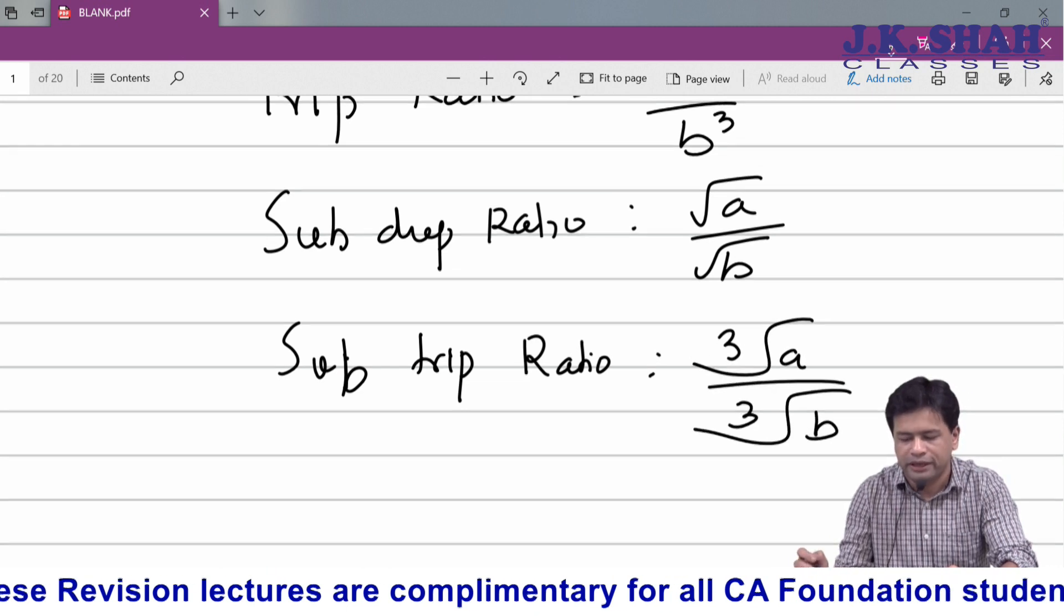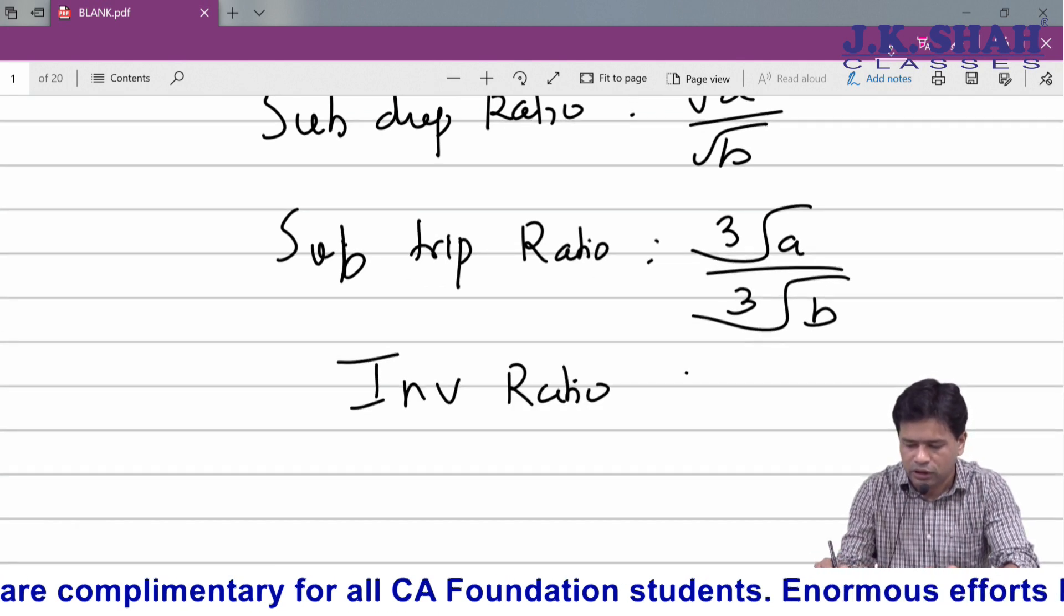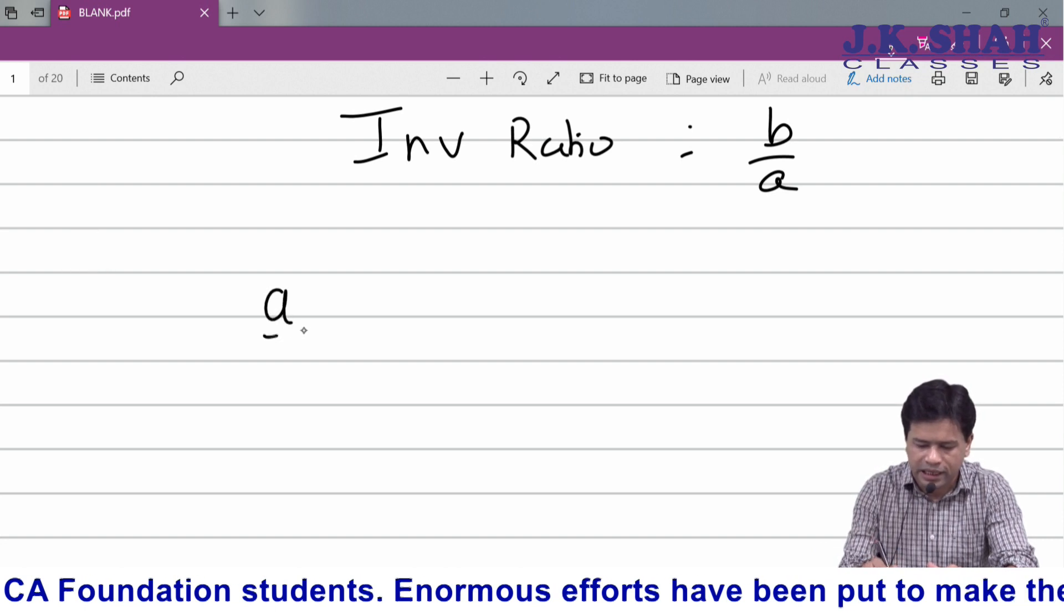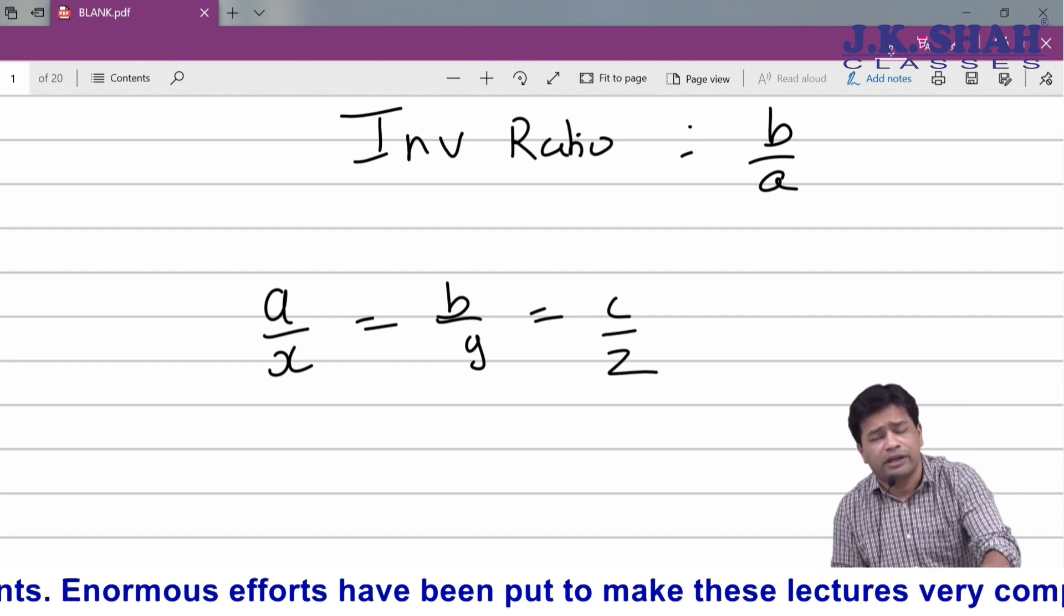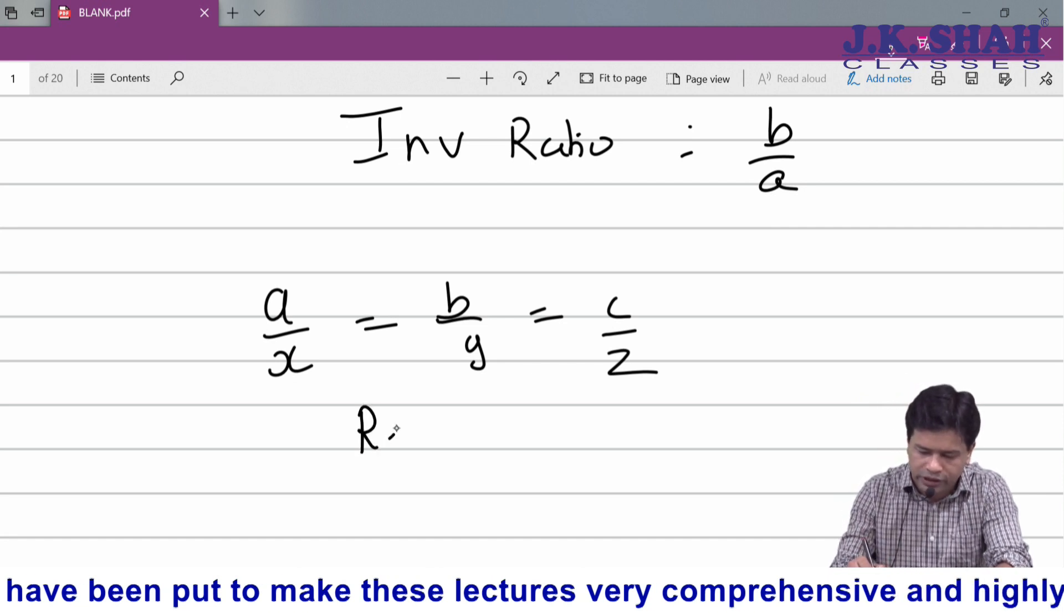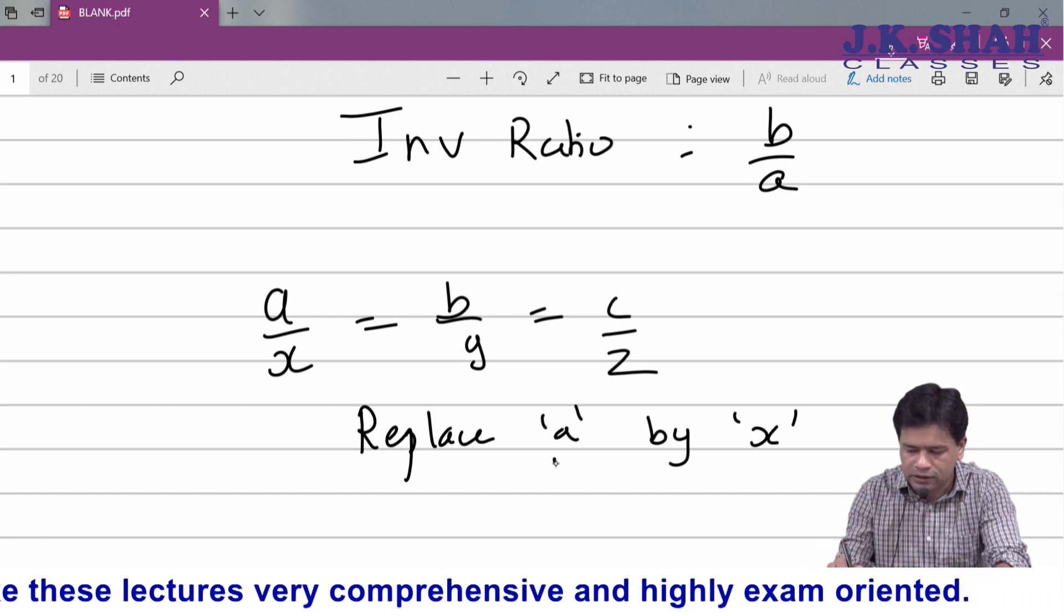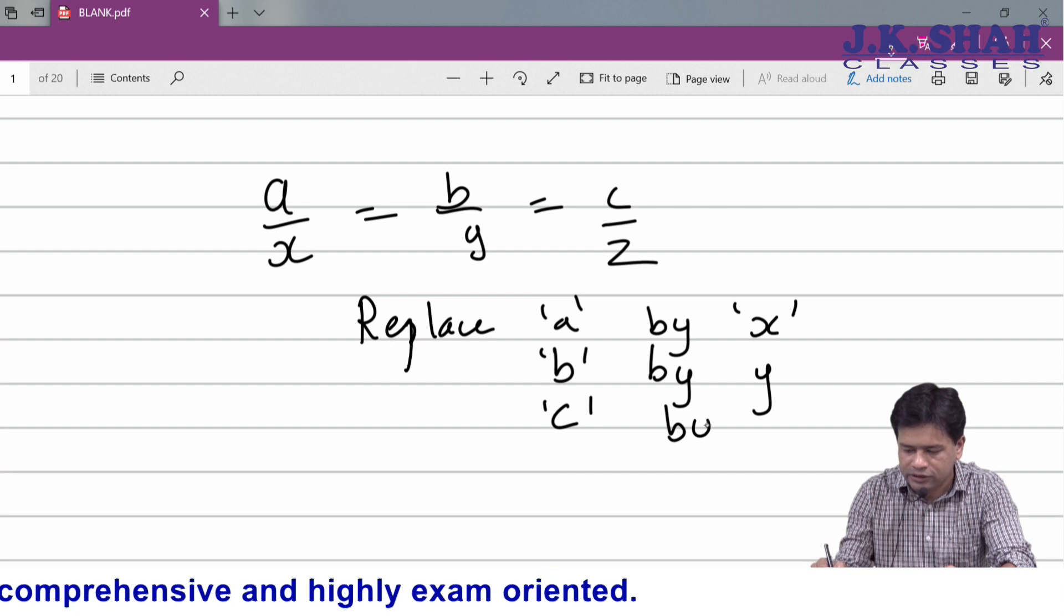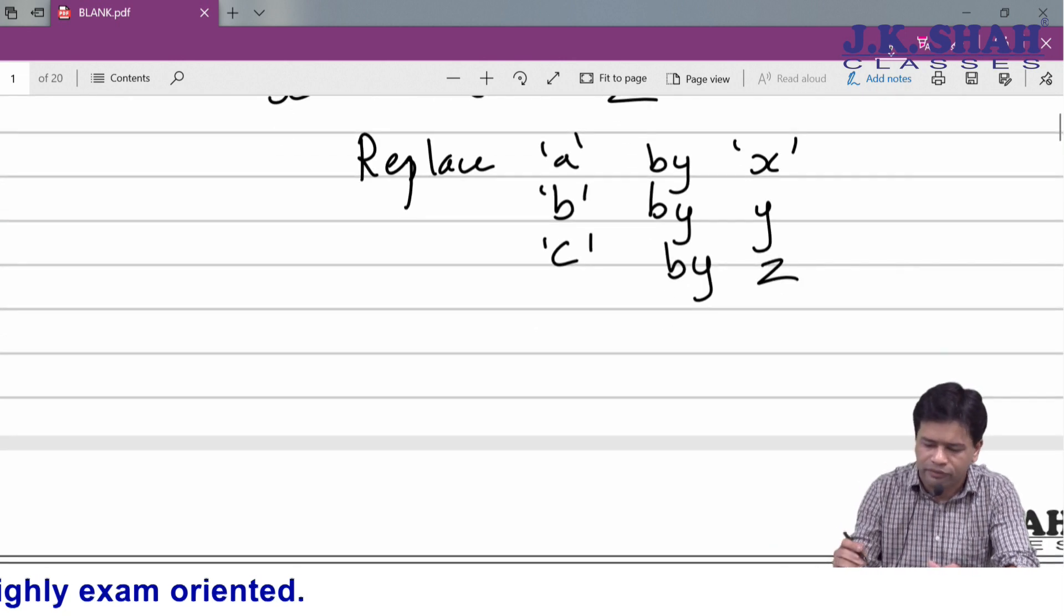Sub-duplicate ratio means root of a upon root of b. Sub-triplicate ratio means cube root of a upon cube root of b. Inverse ratio means b upon a. Then, if it is given to us that a upon x equals b upon y equals c upon z, then generally we assume this as k, but k could be any given constant. What we can do here is replace a by x, b by y, c by z - you can replace every numerator by its denominator.